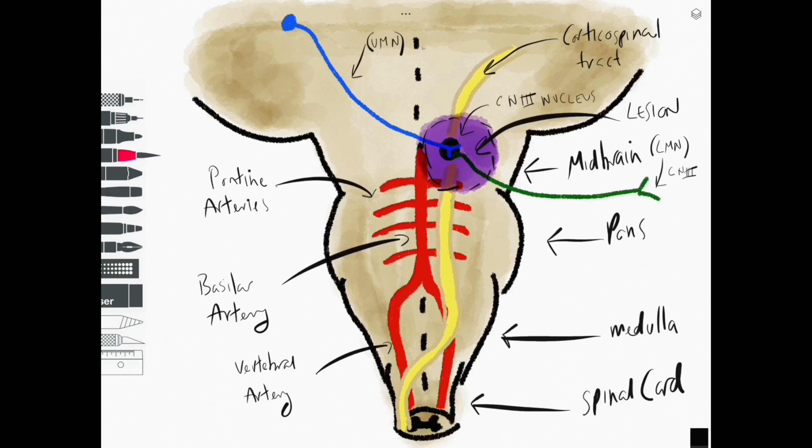So corticospinal tract function equals contralateral weakness or paralysis, while the deficit of function associated with cranial nerve three in this example means we would have ipsilateral weakness or paralysis of a number of those extraocular eye muscles.